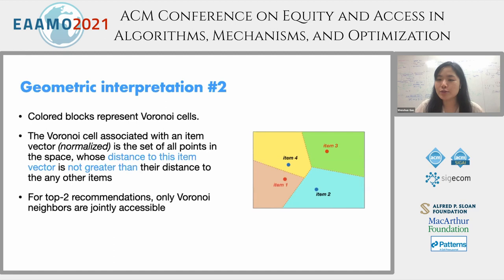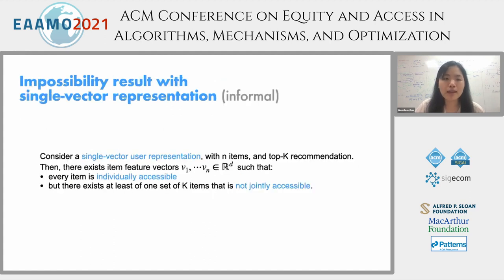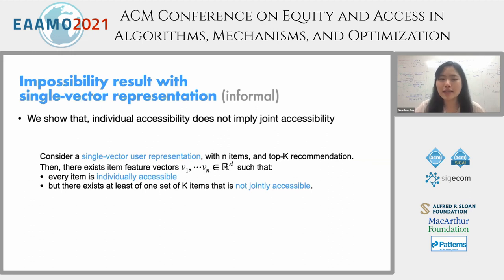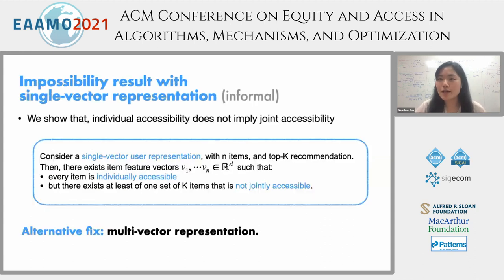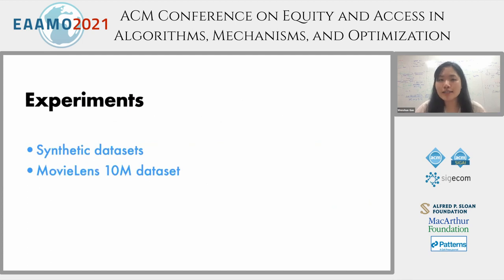From these interpretations, we can see that guaranteeing joint accessibility is pretty hard with a single-vector representation. In fact, we show that individual accessibility does not imply joint accessibility for the single-vector feature representation. Given this impossibility result, the alternative fix we propose is precisely to represent each user by multiple vectors—a multi-vector representation—instead of just a single feature vector. We then demonstrate whether this fix can help improve system accessibility and whether the single-vector representation truly has accessibility issues using synthetic and real datasets.